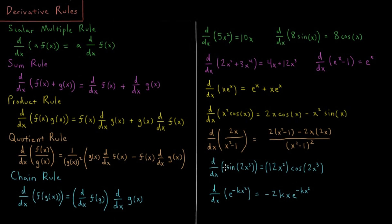Then we take the derivative of the inside, 2x cubed, which gives us 6x squared, and pull that to the outside. So our derivative is going to be 6x squared times cosine of 2x cubed.